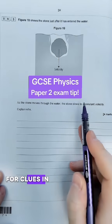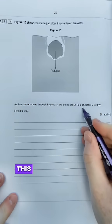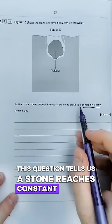You need to be in the habit of looking for clues in exam questions for GCSE physics and GCSE science generally. This question tells us a stone reaches constant velocity.